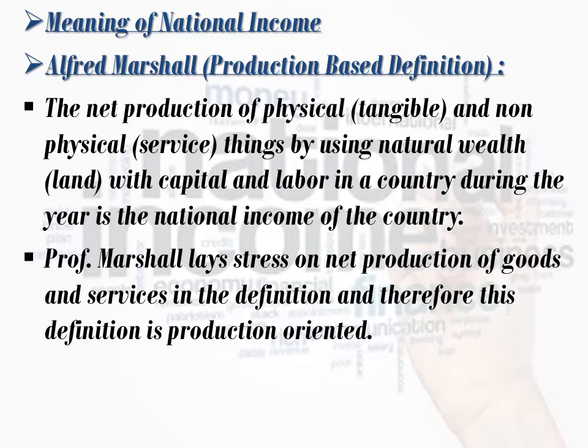When we produce anything using natural wealth — which means land is required, factories and firms need to be set up — that requires capital from the country and labor from the country in a particular year. Whatever gain or profit the country makes from that is what we call the national income of a country. Professor Marshall lays stress on net production of goods and services in the definition, and therefore this definition is production-oriented. He gives the most emphasis to net production of goods and services.